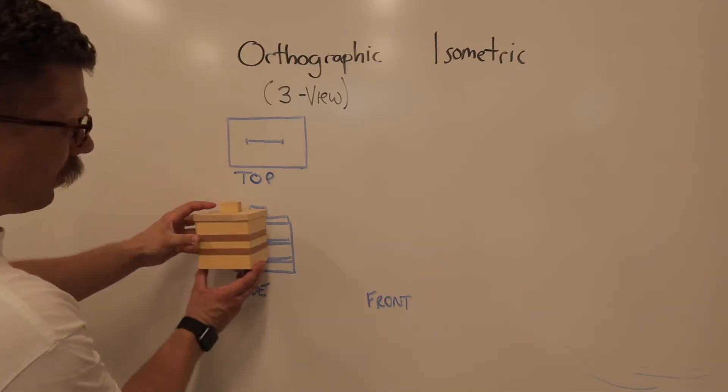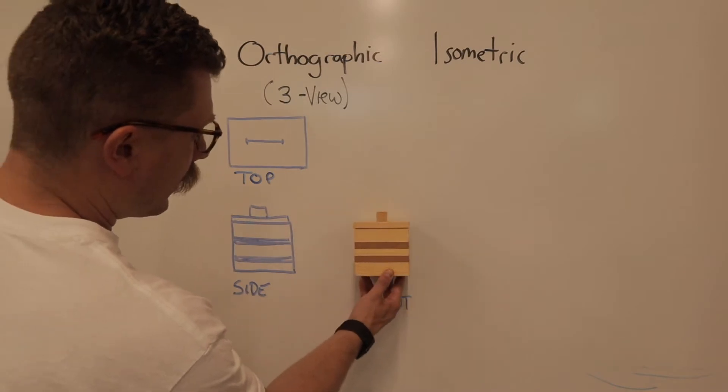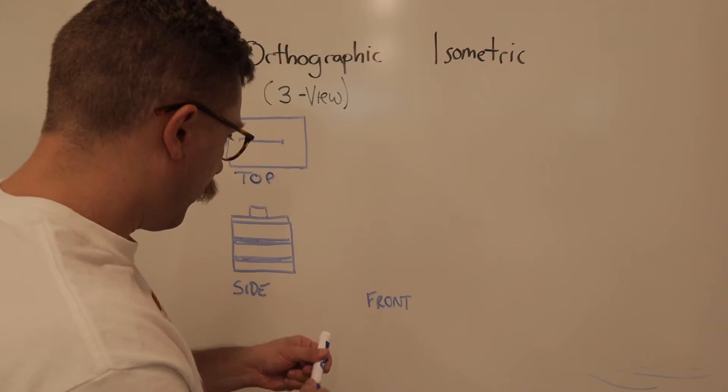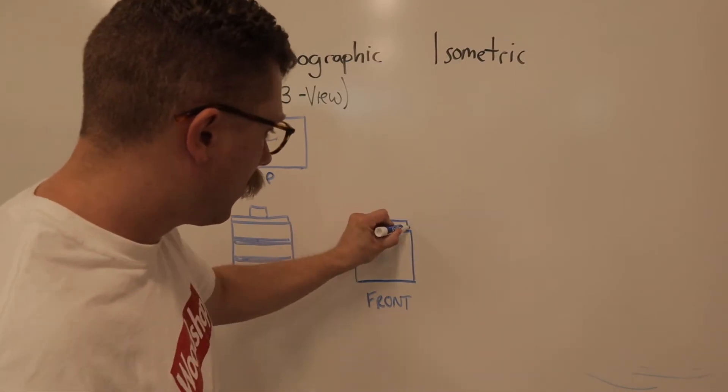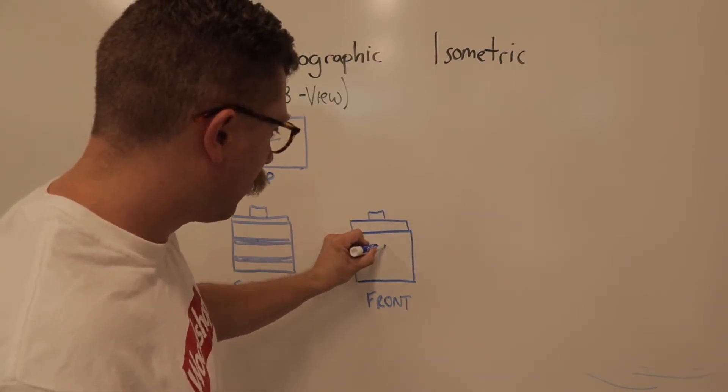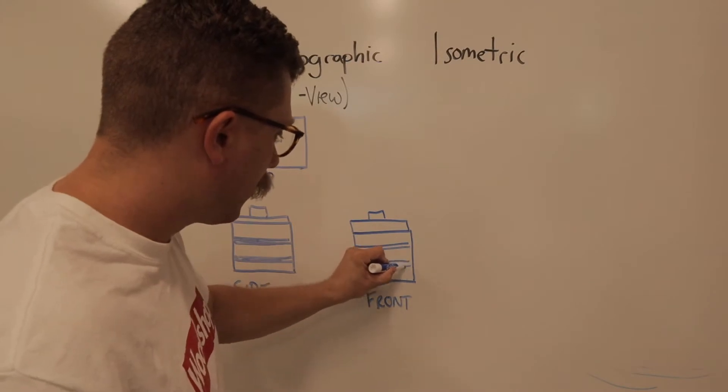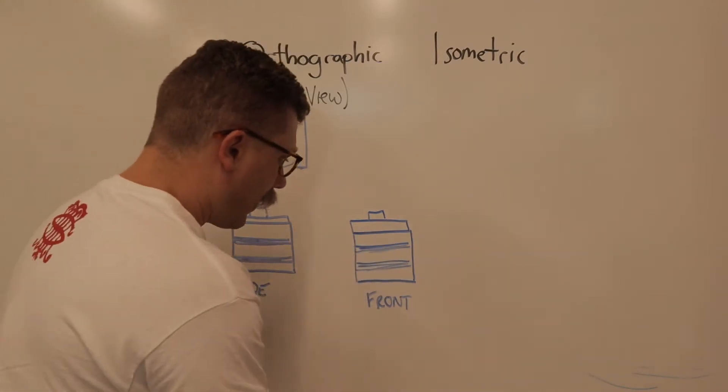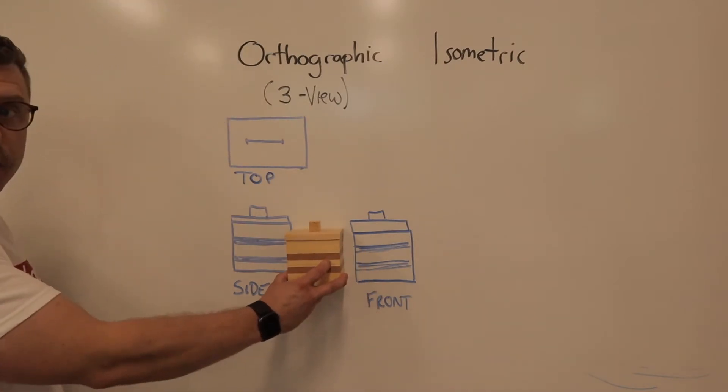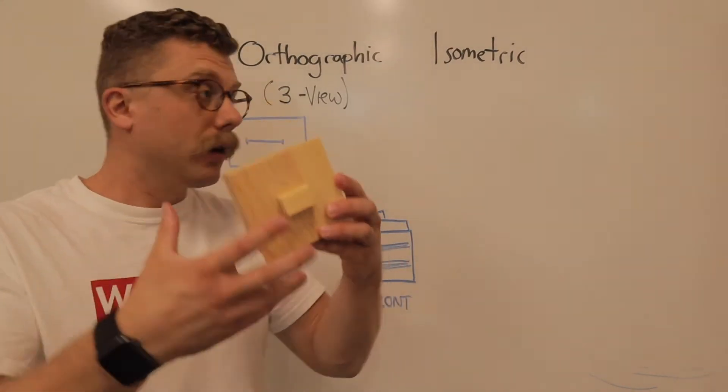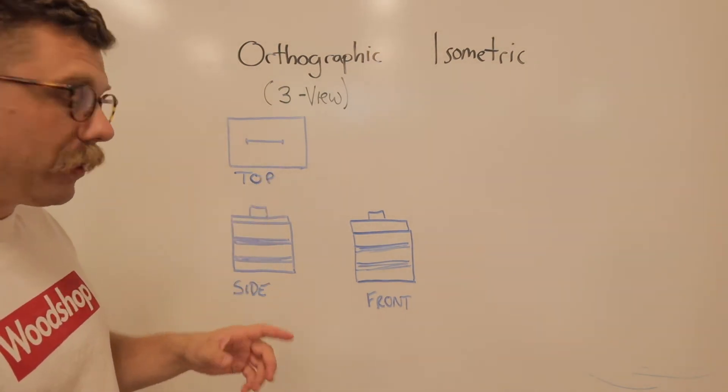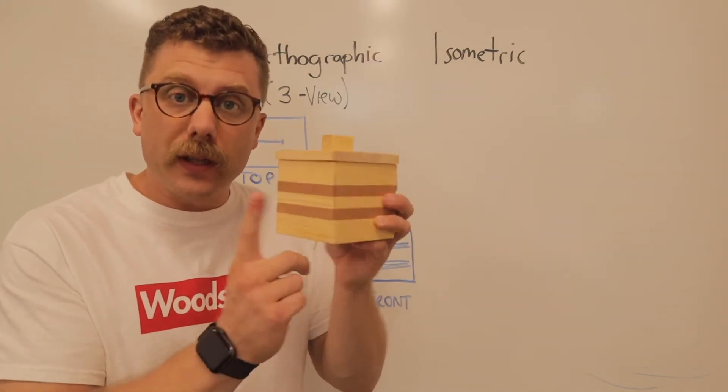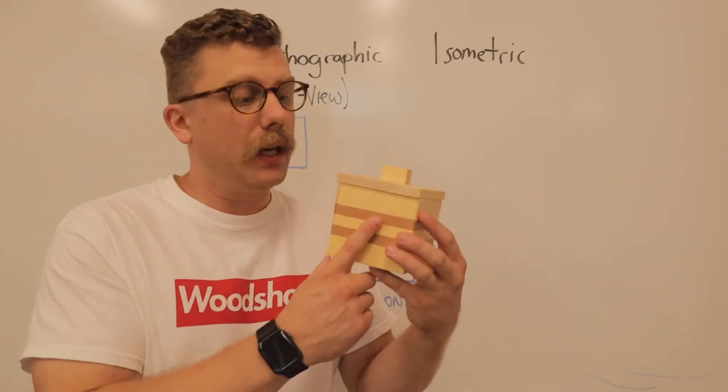A front view is as if you rotated this this way and drew it this way. Now, that would go here with the little handle. We draw the stripes, and that's the front view. Now, in this case, it's a square, which we can see from the top view. In a square, the side and the front are going to be the same, unless there's a different detail on this side.